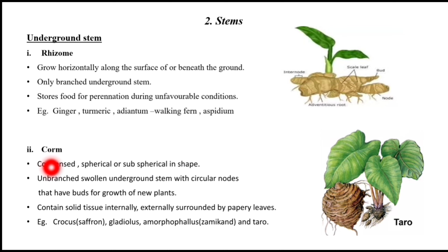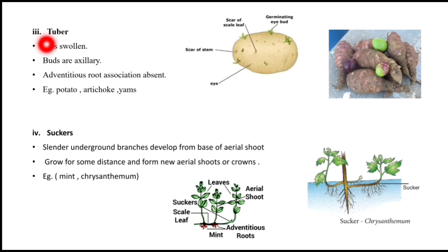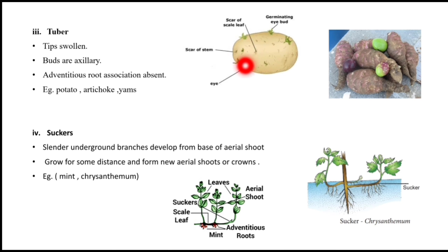Next is corm. Corm is spherical or sub-spherical in shape. It is unbranched and swollen, and the nodes are circular. The buds grow from the nodes and it is helpful for vegetative propagation. For example, Crocus, Gladiolus, Amorphophallus, and Taro. Tuber is an underground stem which is swollen at the tip. The buds are axillary and adventitious roots are absent.